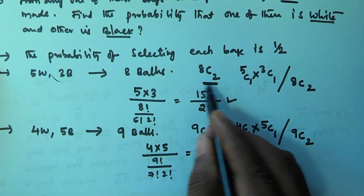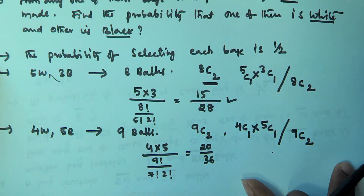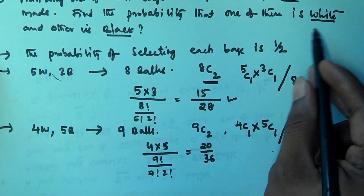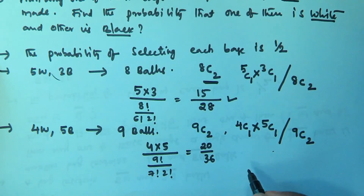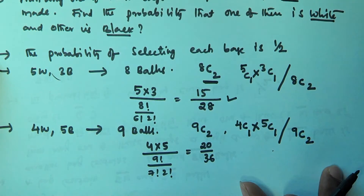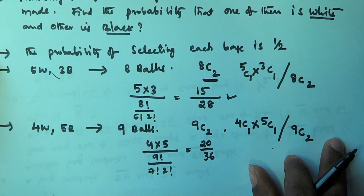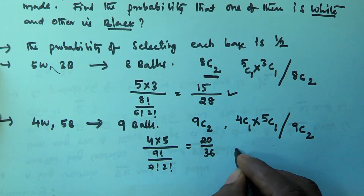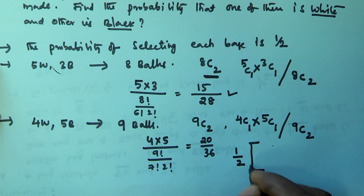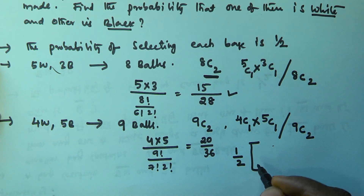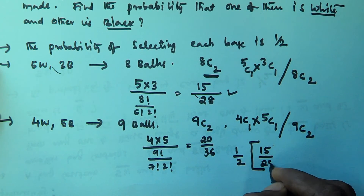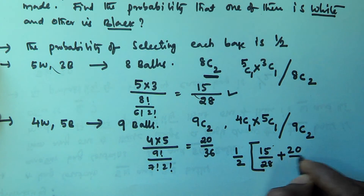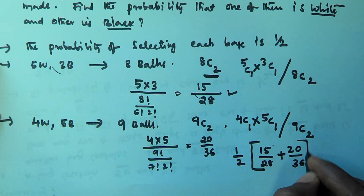So either we are selecting the first bag or the second bag. The overall probability that one of them is white and another is black, from any one of these two bags, is: 1/2 × 15/28 (if we select the first bag) + 1/2 × 20/36 (if we select the second bag). We multiply by 1/2 because we are selecting only one of the two bags.